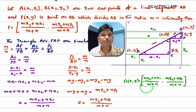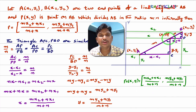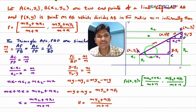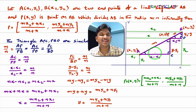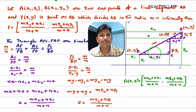This section formula is all about finding the coordinates of a point which divides line segment AB in the ratio M:N. In the next class, we will learn the section formula when P divides AB externally.